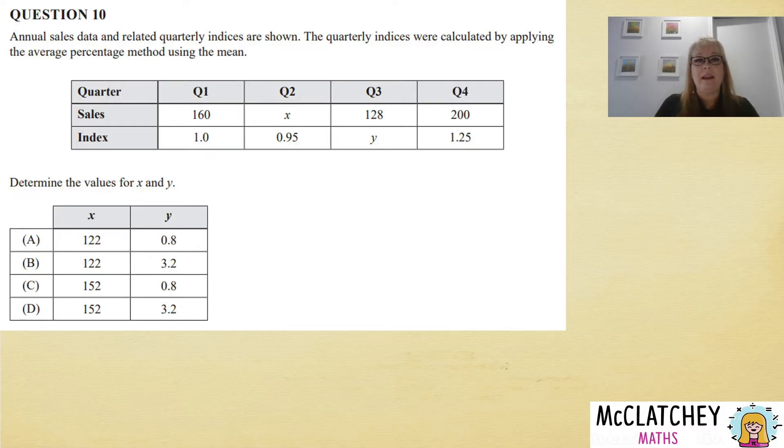So what we're going to do first is recognize that to get quarter 2, it's 95% of the value of 160—that's what this 0.95 means.